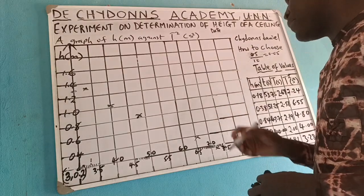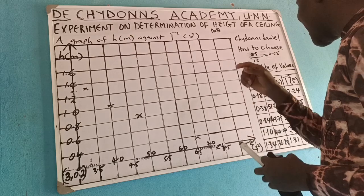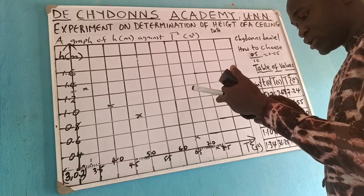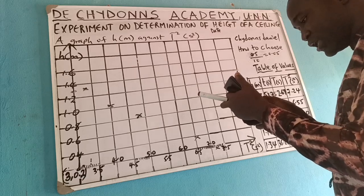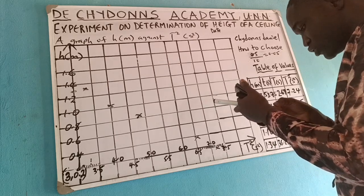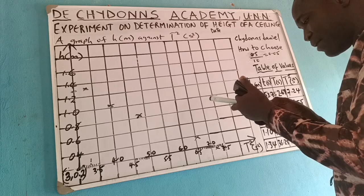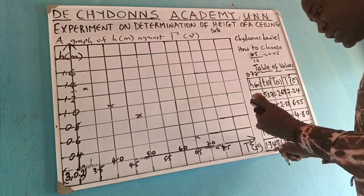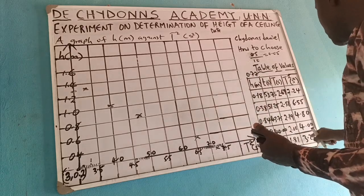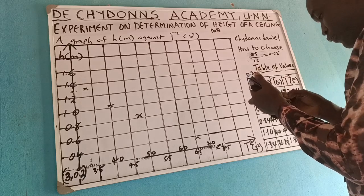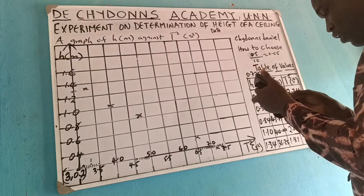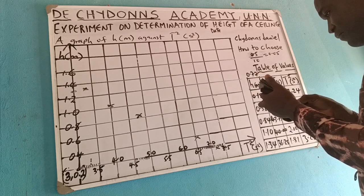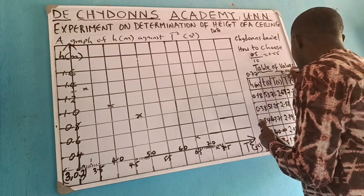Next, find the centroid before drawing the line of best fit. Add all values of H: 0.18 + 0.38 + 0.84 + 1.10 + 1.34, then divide by 5. Add all values of T squared: 7.24 + 6.55 + 4.8 + 4.0 + 3.28, then divide by 5. This gives the centroid at approximately (5.17, 0.77) — or (5.174, 0.768). Circle the centroid on the graph.